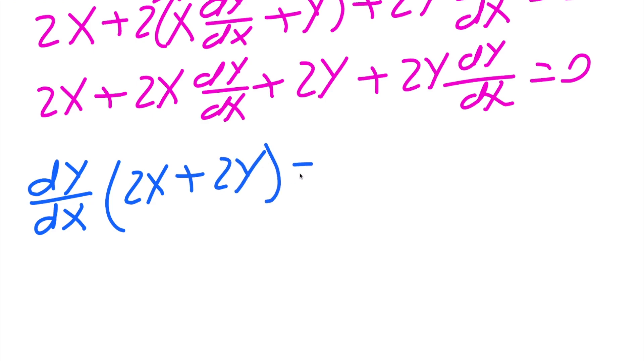And everything else, we need to move to the right-hand side. So if you want to move the 2x, you need to subtract 2x from both sides. So we're going to get -2x. And to move the 2y, you subtract 2y from both sides. So you get -2y.